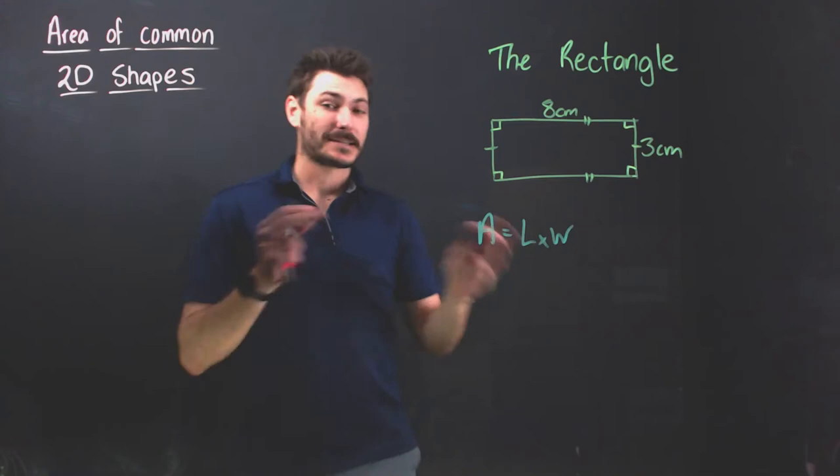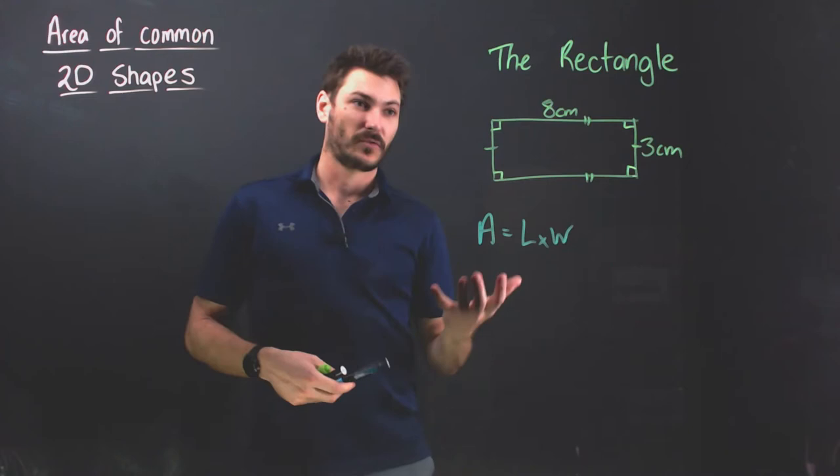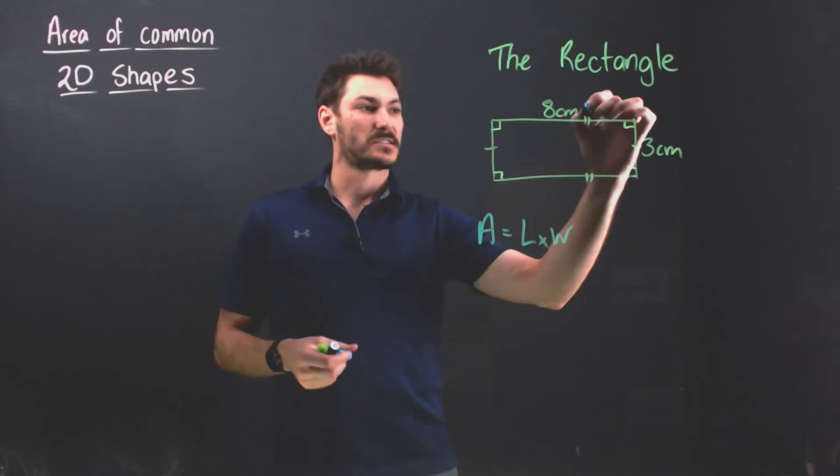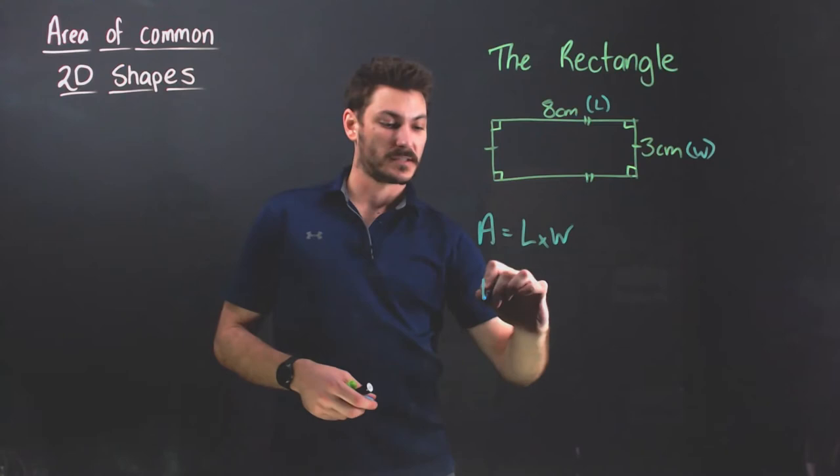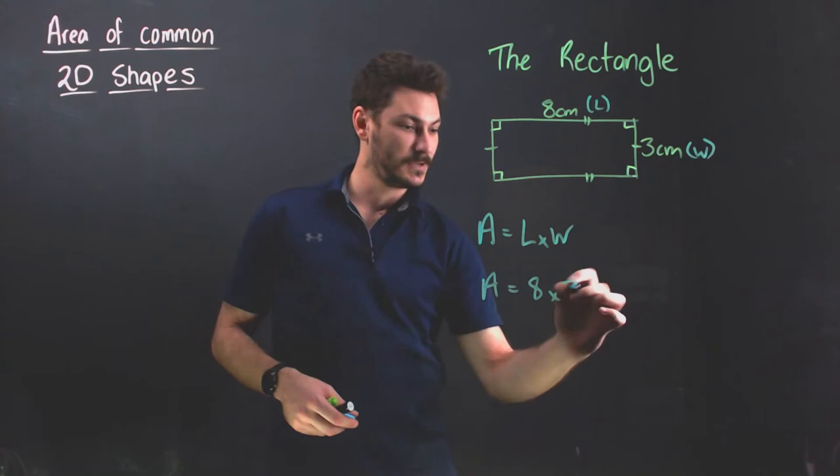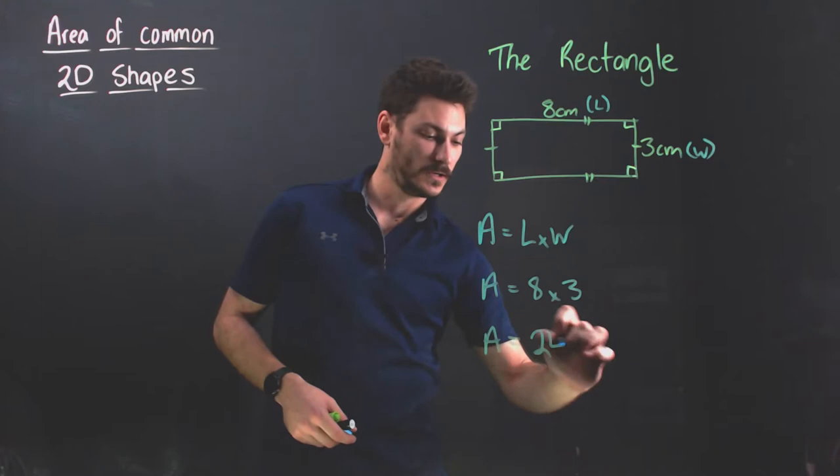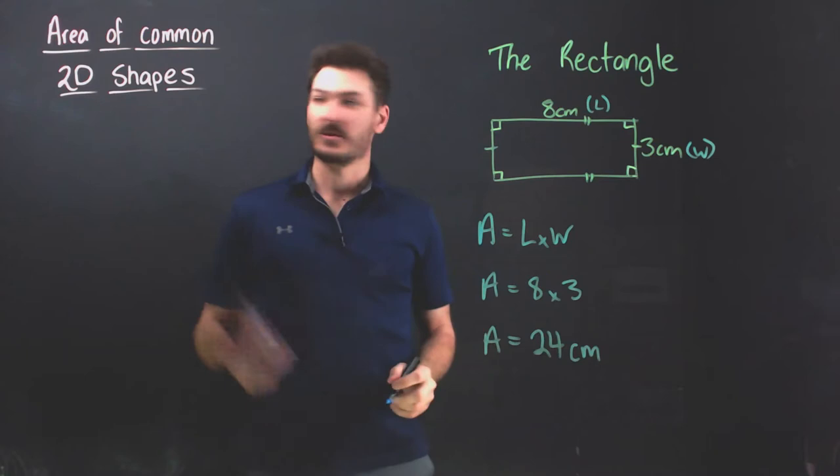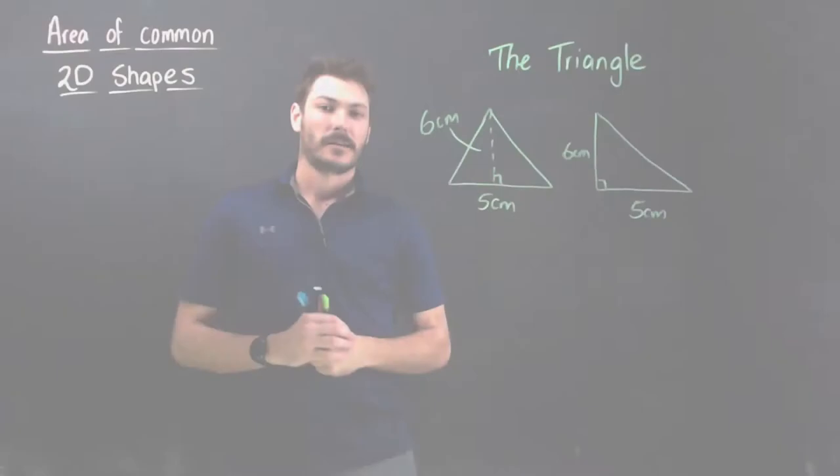When we're multiplying two numbers together the order doesn't matter—three times four is the same as four times three. I'm just going to say that this is length and this is width. Now I'm going to substitute in: length is eight times the width which is three, and I get eight threes are 24. But I also need my units which are centimeters, and because area is in two dimensions we represent that dimension in our little power on our units, so 24 centimeters squared is the answer.